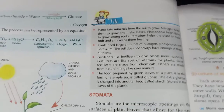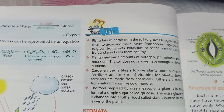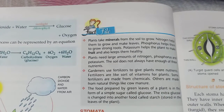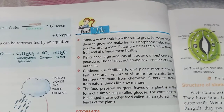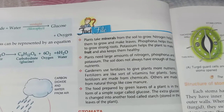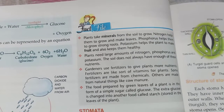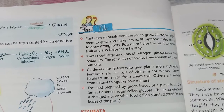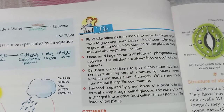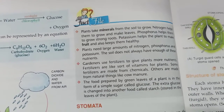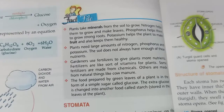Now the fact file. Plants take minerals from the soil to grow. Nitrogen helps them to grow and make leaves. Phosphorus helps to grow strong roots. Potassium helps the plant to make fruit and also keeps it healthy. Plants need large amounts of nitrogen, phosphorus, and potassium, but the soil does not always have enough of these nutrients.